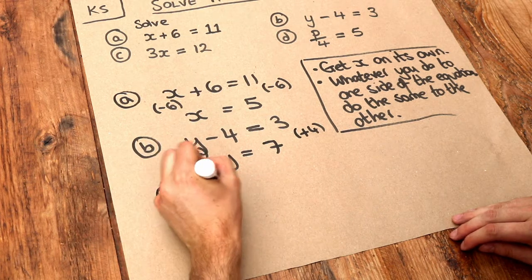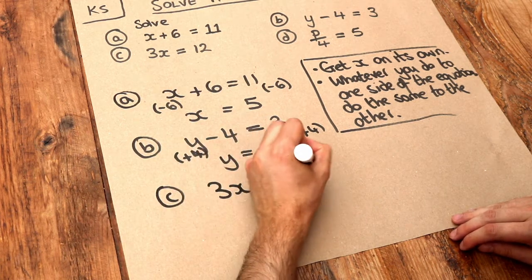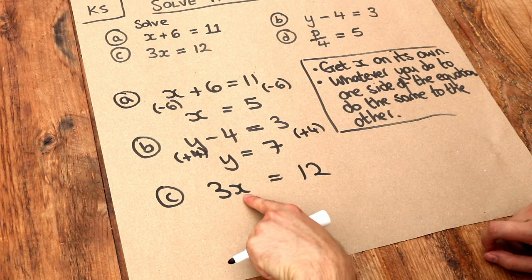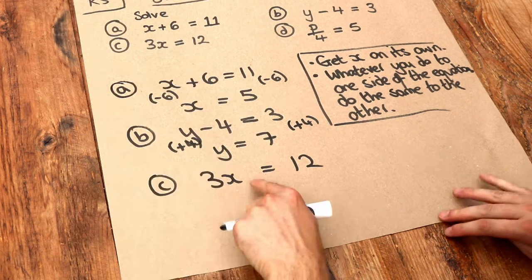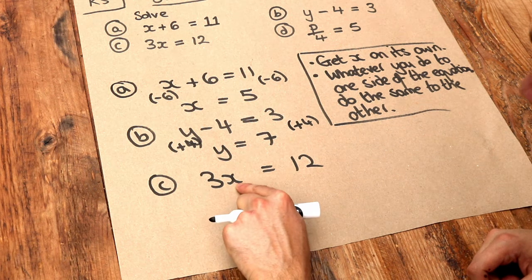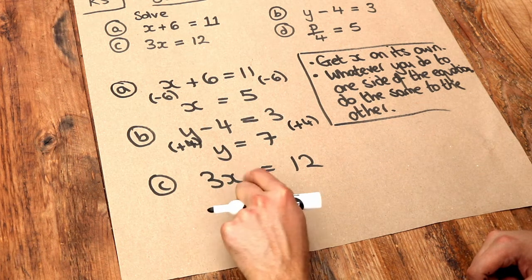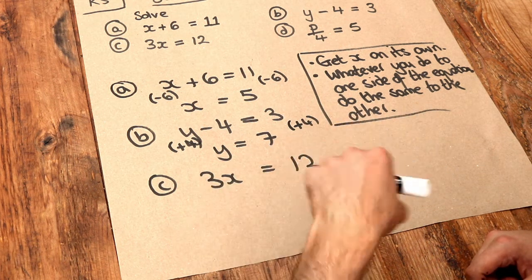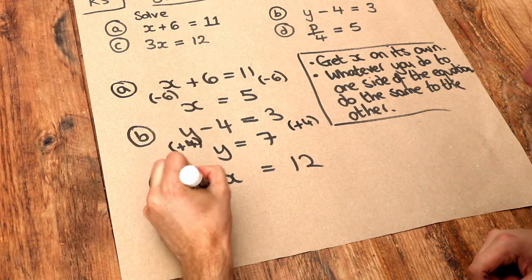What about the next one? 3x is equal to 12. We want to get rid of that 3 in front of the x, so we're just left with x. Remember that 3x means 3 times x. So x has been multiplied by 3. We want to get rid of that 3, so we've got to do the opposite, which is to divide by 3.